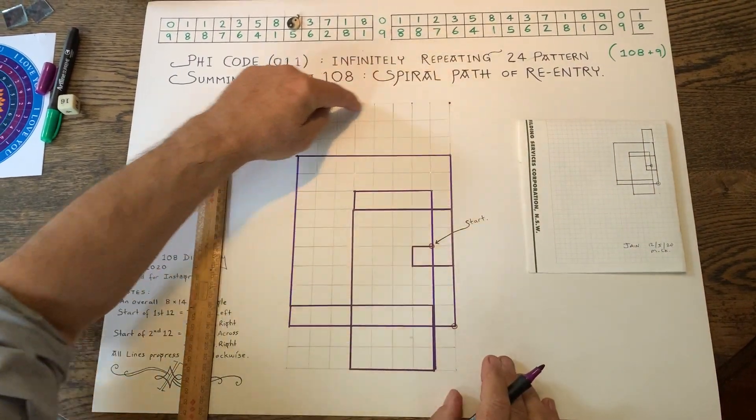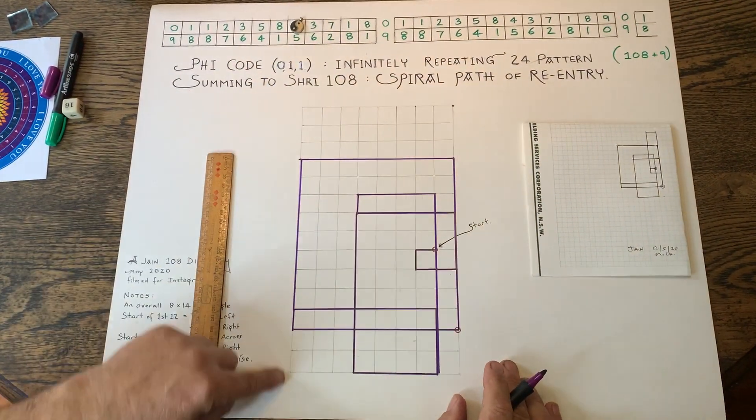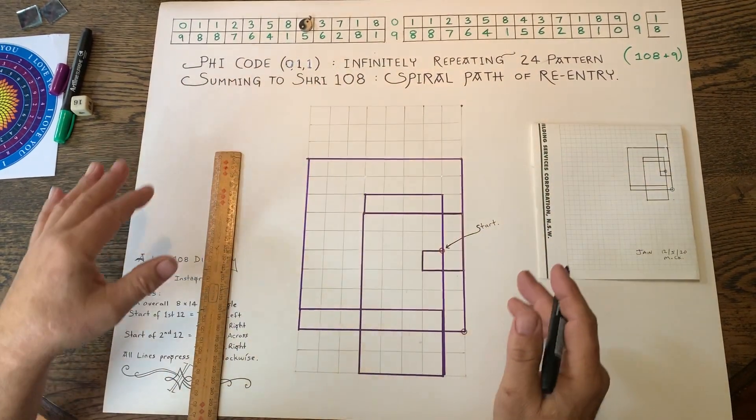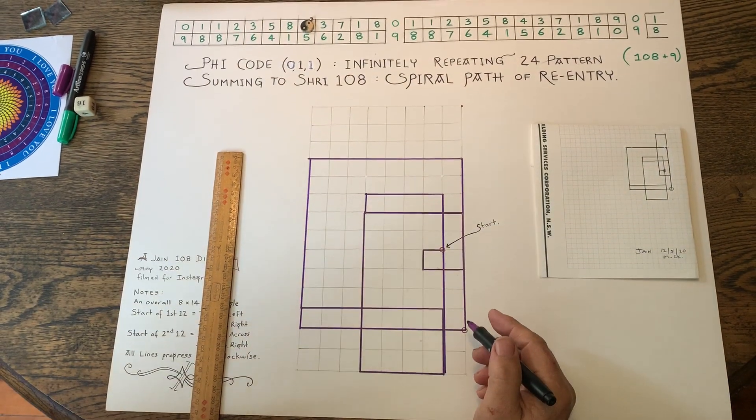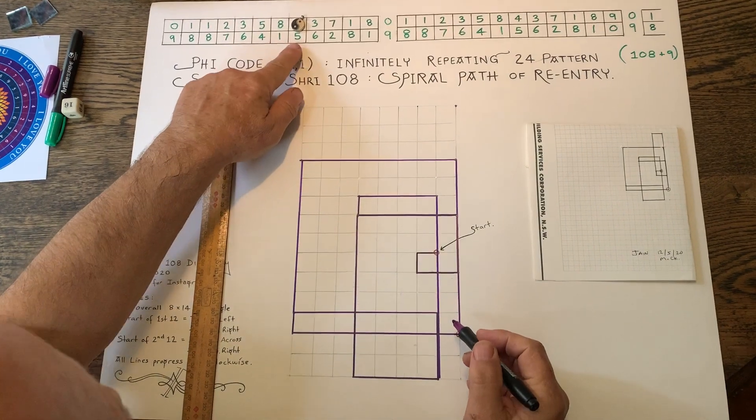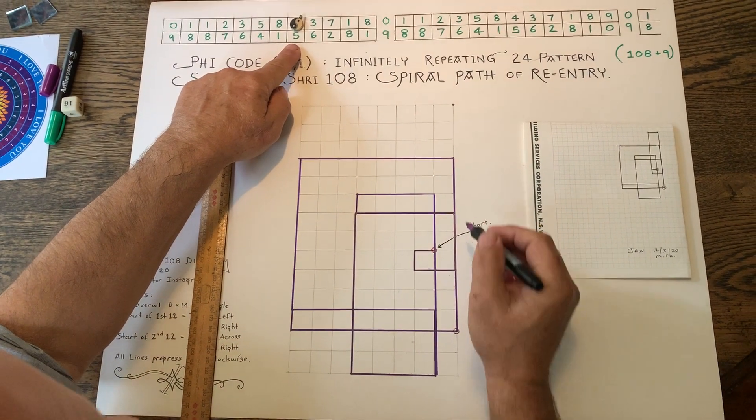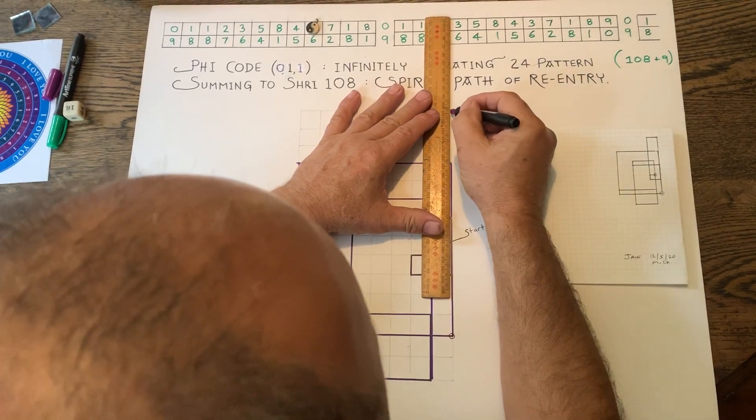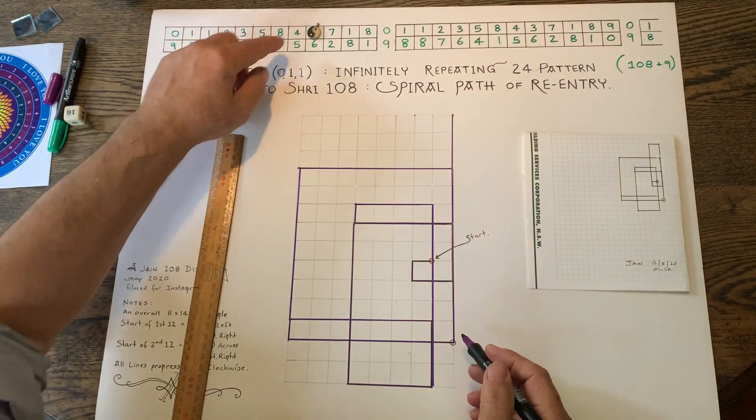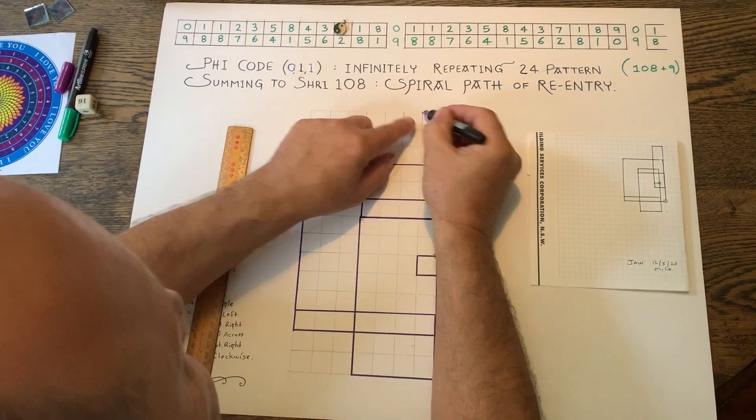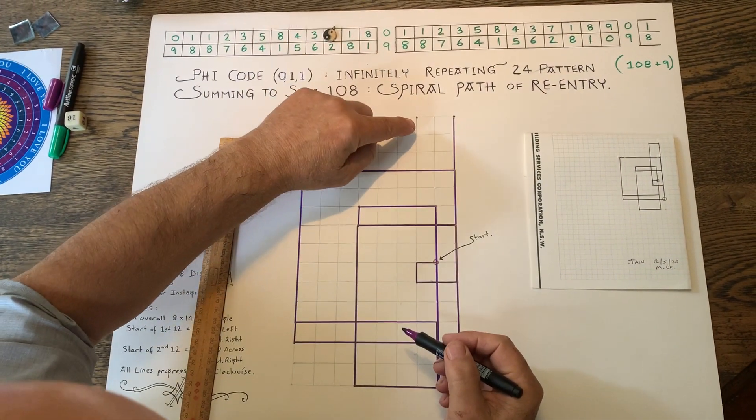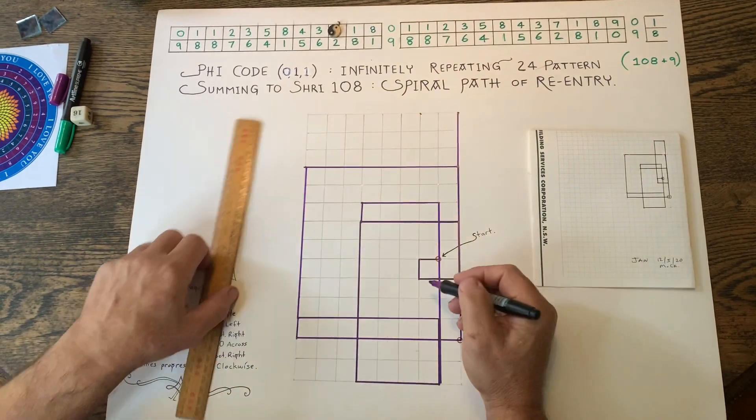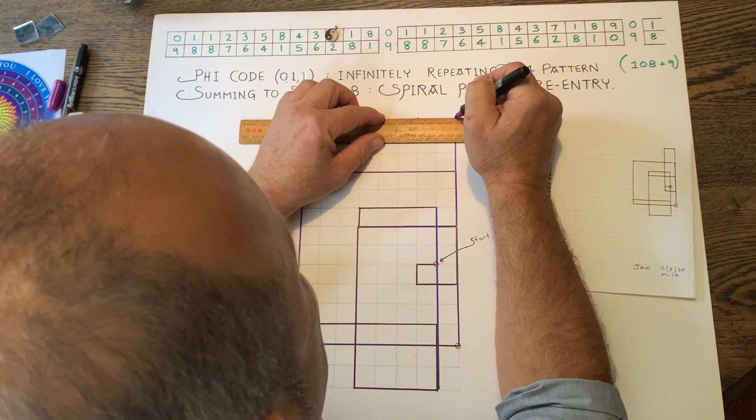So you can see why I created an eight by 14 rectangle because the whole solution fits into this graph. So I went six up. So from here I'm going six up. Two across, one, two, and then eight down. One, two, three, four, five, six, seven, eight. I'm going to end up here. So you can see we're almost finished.